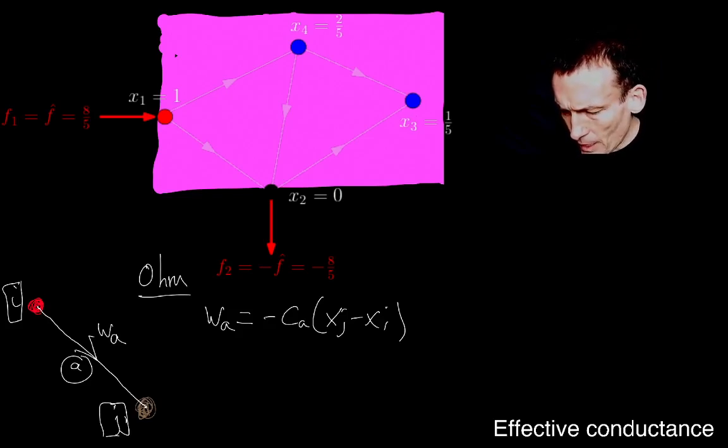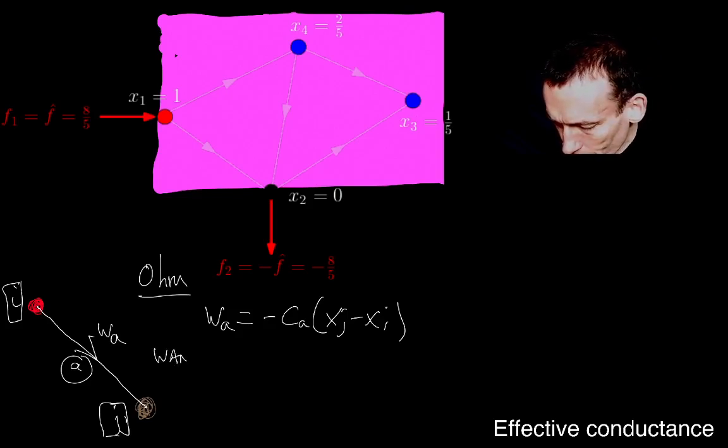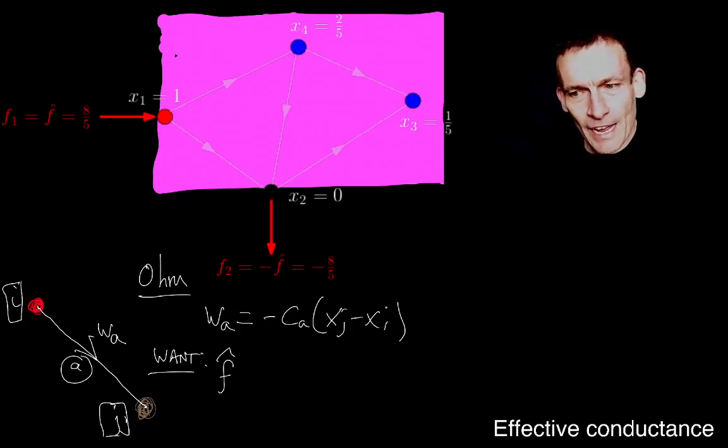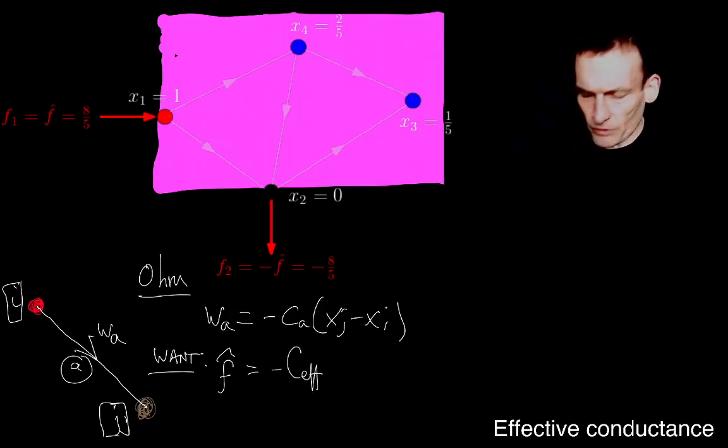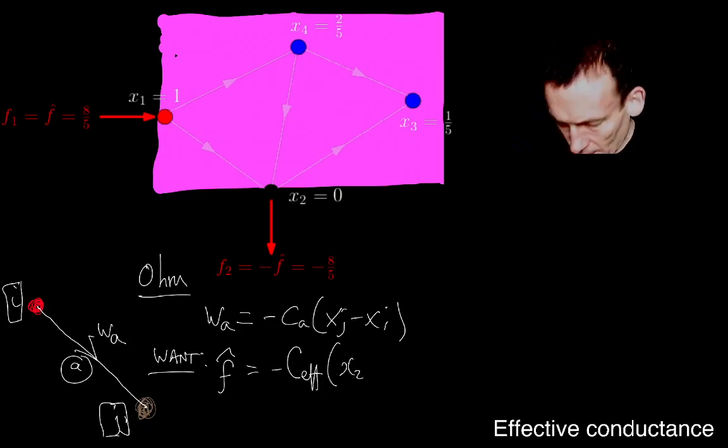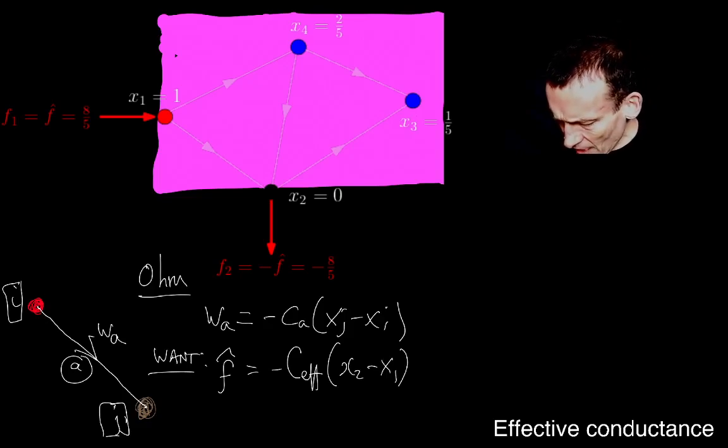I want to emulate Ohm's law, but now I want to consider my pink box to kind of just be a conductor, and I want to know what's the effective conductance of it. If I put unit voltage at one node of that box and then ground another node, so what I want to do is I want to emulate that. I know the current coming out of my red node. It's F hat. I've just worked that out. So that's my WA in this case. And then, of course, this is the thing I don't know yet. That's my effective conductance. And then, of course, the X2 is basically my XJ, and then the X1 is basically my Xi.